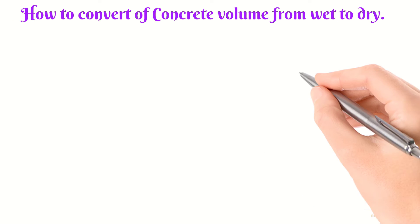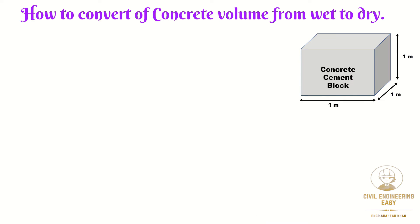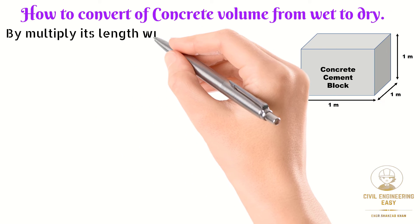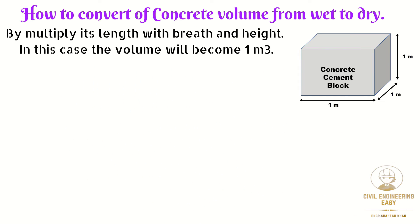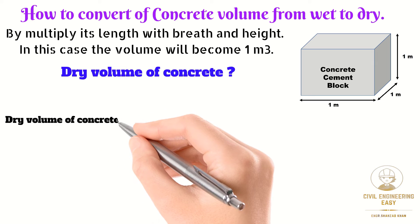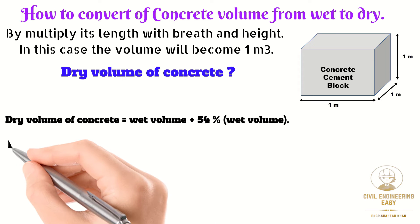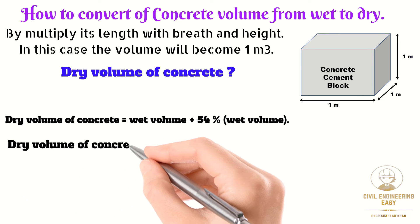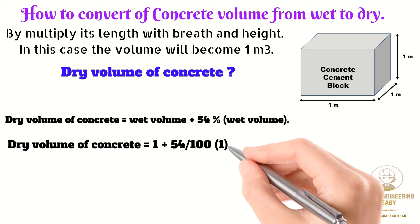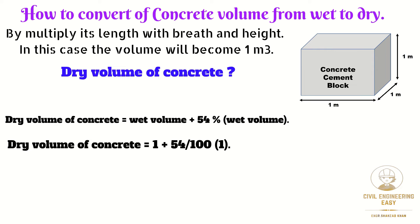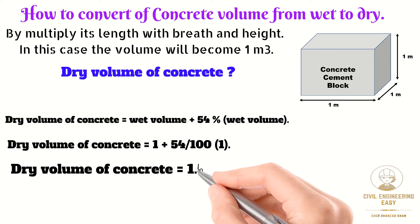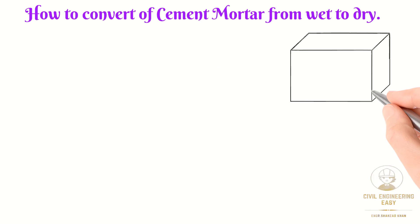Suppose we have to make a cube from concrete with all dimensions equal to 1 meter. The wet volume of the cube is calculated by multiplying length, width, and height, giving 1 cubic meter. To calculate the dry volume of concrete, we apply the formula: dry volume equals wet volume plus 54% of the wet volume. So the dry volume of concrete equals 1 + 0.54 = 1.54 cubic meters.